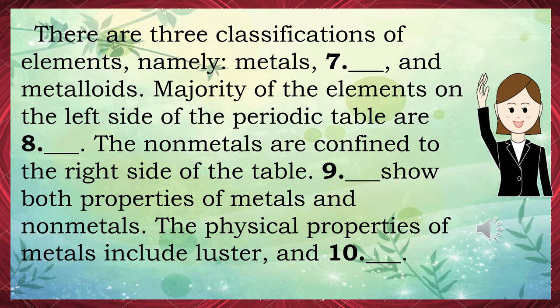There are 3 classifications of elements: metals, non-metals, and metalloids. Majority of the elements on the left side of the periodic table are metals. Non-metals are confined to the right side of the table. Metalloids show both properties of metals and non-metals. The physical properties of metals include luster and the ability to conduct heat and electricity.